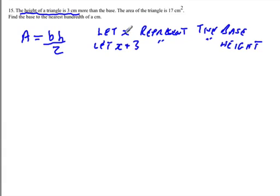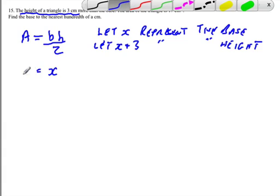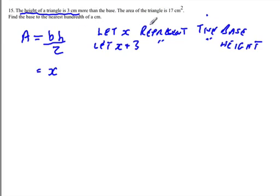Now we're going to substitute into the equation where base is x and height is x plus 3. Area is equal to x times... sorry, I should put in the value for area because from the question we know that the area is 17 centimeters squared. So we can sub in 17 for the area, and this is going to be x times x plus 3 divided by 2.